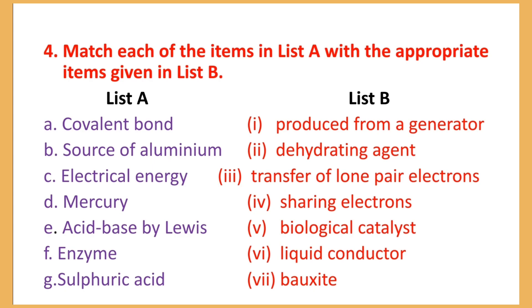Number B: Source of aluminium — List number 7: bauxite. Number C: Electrical energy — List number 1: produced from a generator.